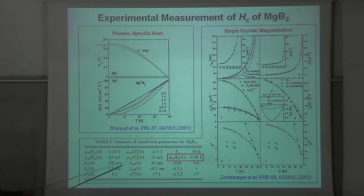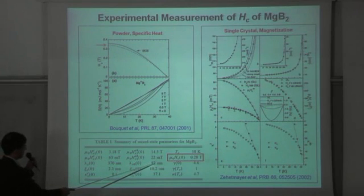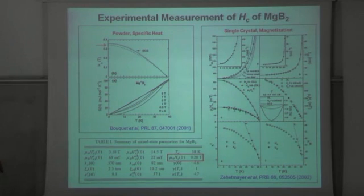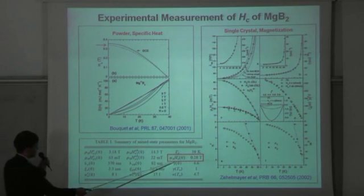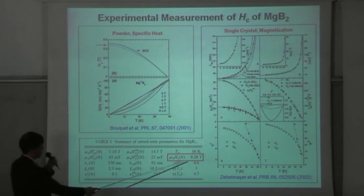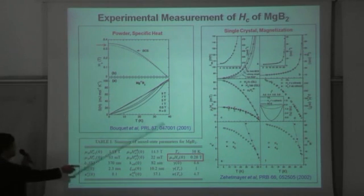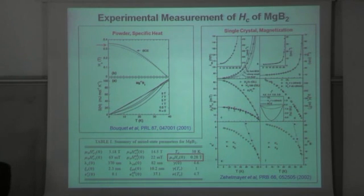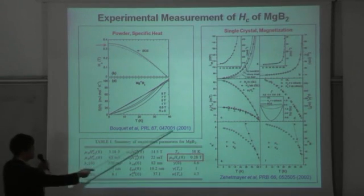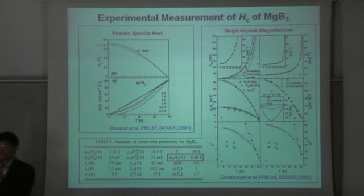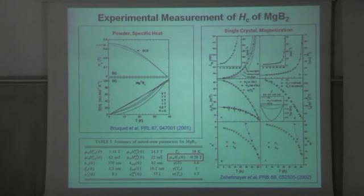And so we can find the thermodynamic critical field to be about 280 millitesla. And so these 350, 280, these are the experimental data. So at least from these early data from 2001 and 2002, which is fairly close to the time when it was discovered, we already see that it should definitely be higher than that of niobium. How much higher? Whether it really can go to 800 millitesla, that's something to be seen.